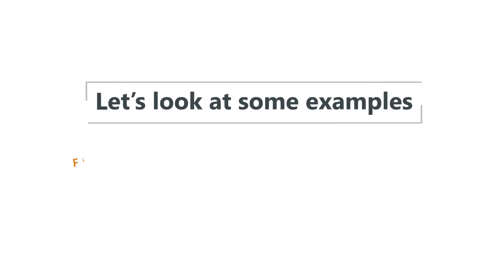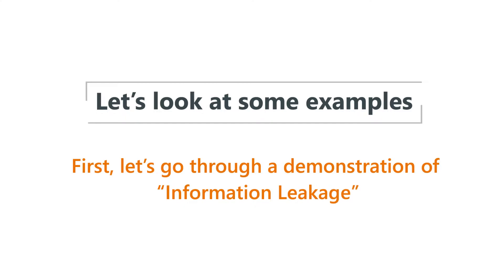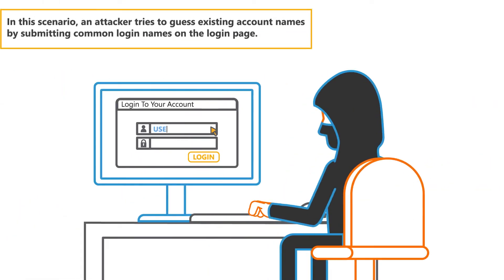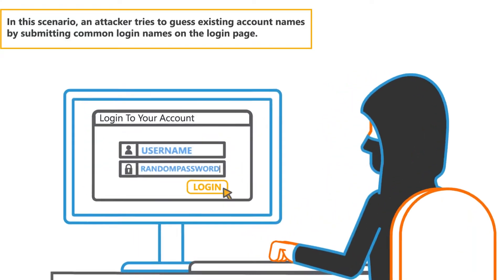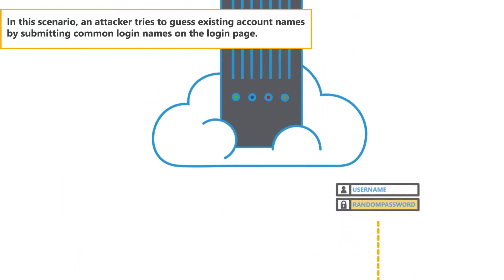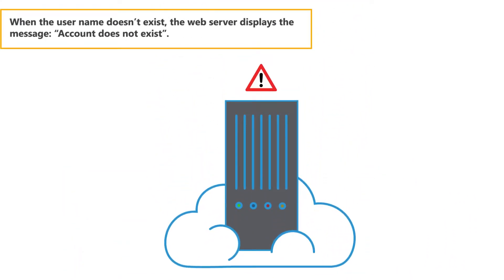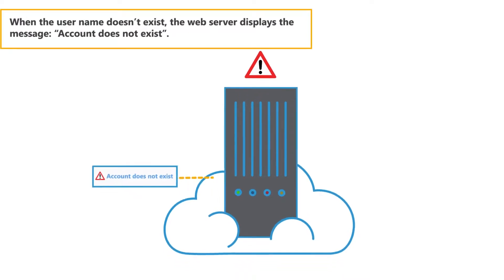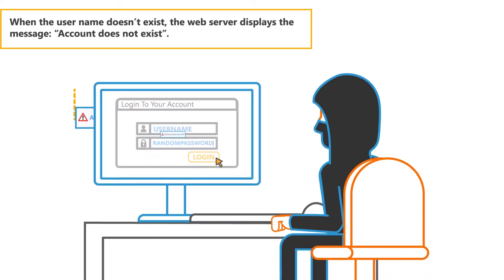Let's look at some examples. First, let's go through a demonstration of information leakage. In this scenario, an attacker tries to guess existing account names by submitting common login names on the login page. When the username doesn't exist, the web server displays the message: Account does not exist.